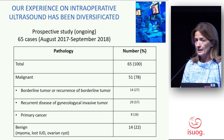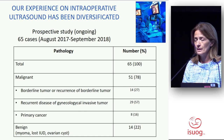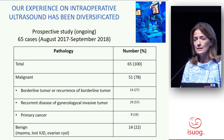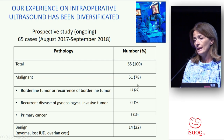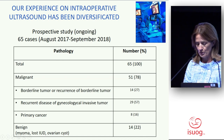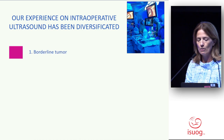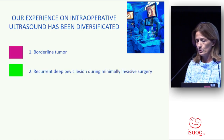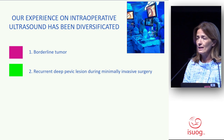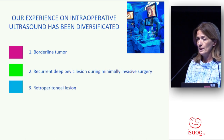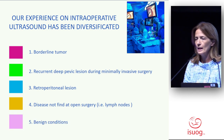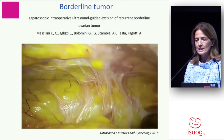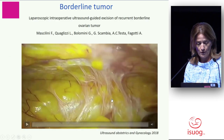There is an ongoing prospective study in our institution. Since last year, we analyzed 65 cases. You can see the most frequent pathology is malignant, but we could also apply this in benign conditions. We prepared a list of different applications: first, borderline; second, recurrent deep pelvic lesion; third, retroperitoneal lesion — not found at open surgery — and also benign conditions.